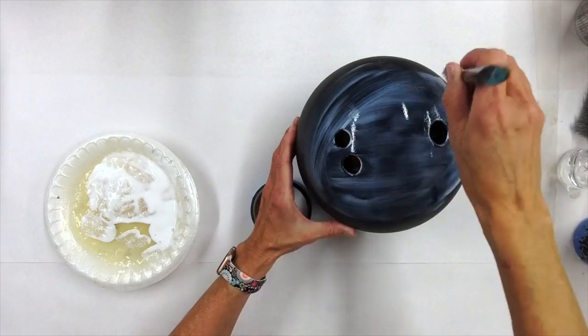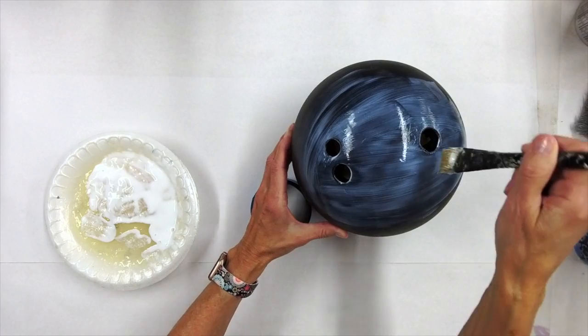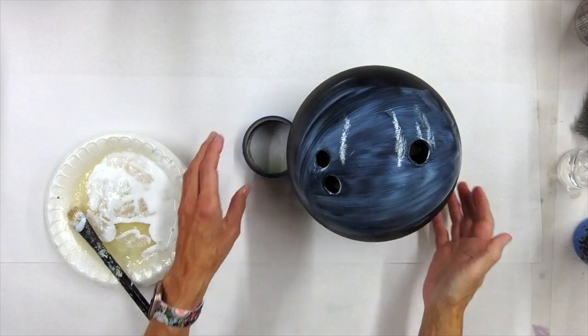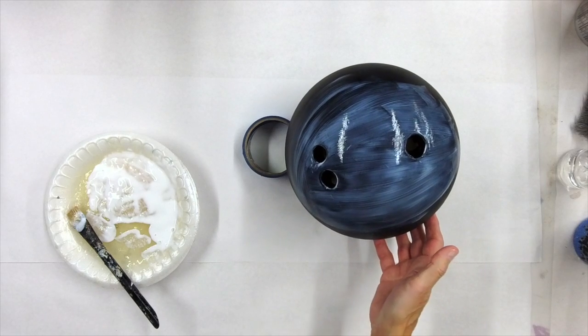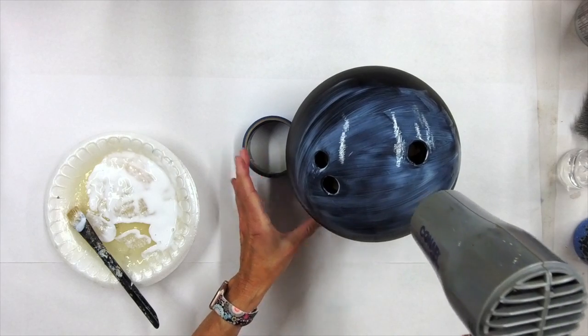So I'm going to get the bottom of this done like I did with the black. I also put paint down the holes. And I'm going to try to just blow dry this a little bit and get a little bit dry before I put it on the tape.